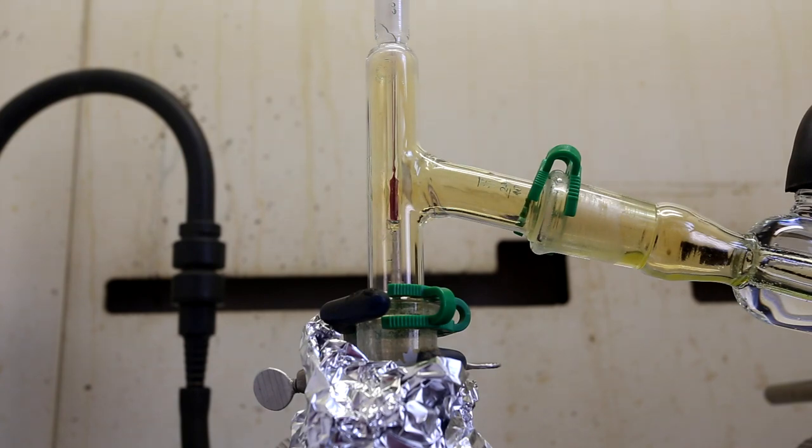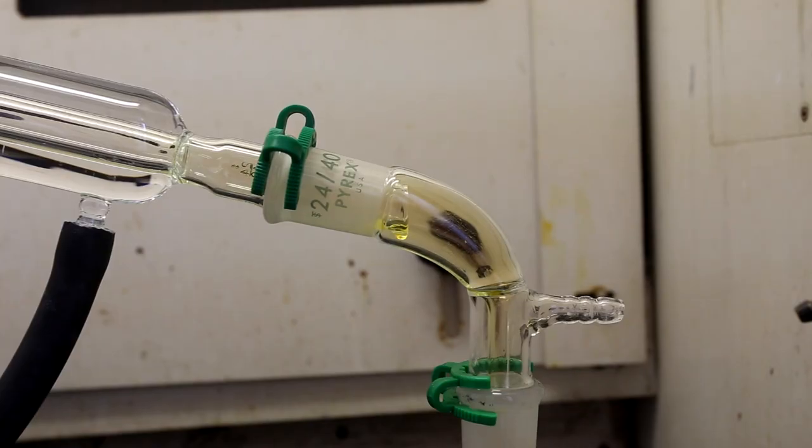When it first starts coming over, it might have a brown color like this. The brown gas is nitrogen dioxide gas and it taints the distillate a little so the distillate comes over as a yellow color. Good control of the temperature and keeping the temperature at or below 83 degrees Celsius will limit the amount of nitrogen dioxide gas that is produced. The nitrogen dioxide gas is mostly formed by decomposition of the nitric acid due to excessive heating.